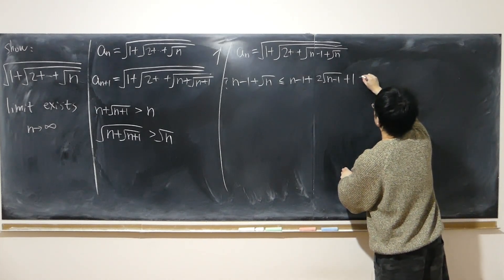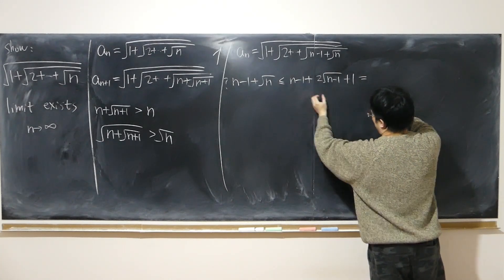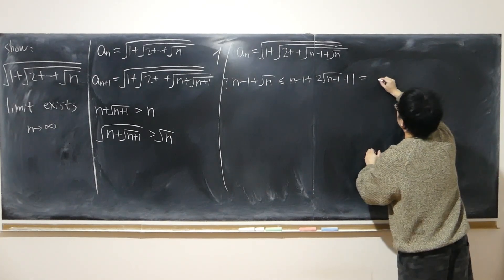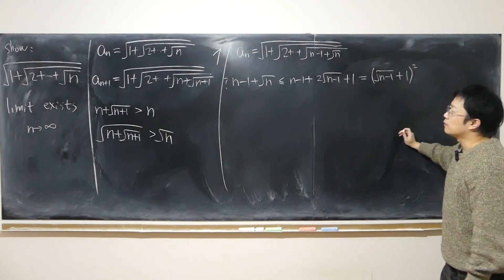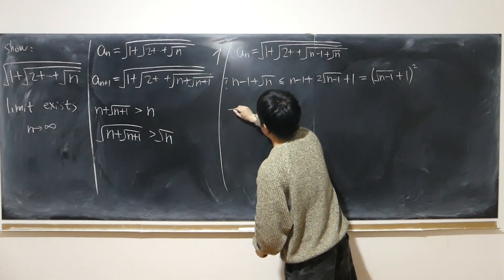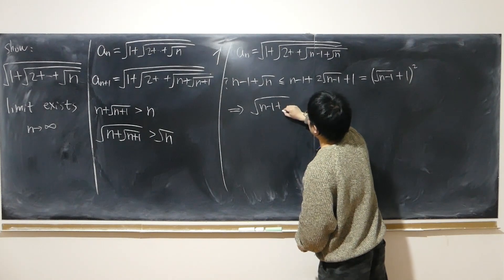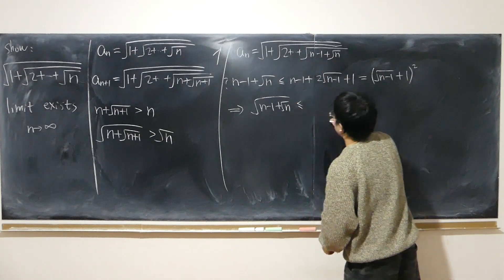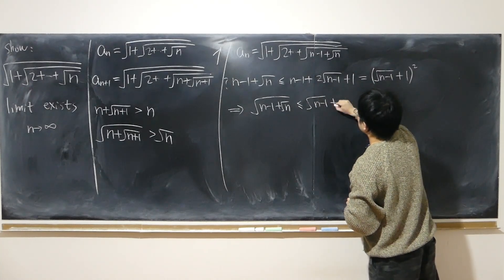That right-hand side is actually a perfect square — it's (square root of n-1 + 1) squared. So if I can show that inequality holds, then I can show that square root of n-1 plus square root of n is less than or equal to the square root of this, which is just square root of n-1 plus 1. I can loosen the inequality this way.